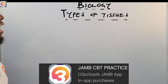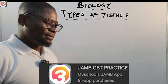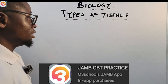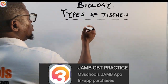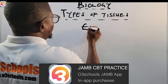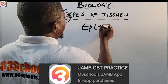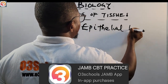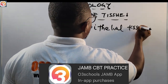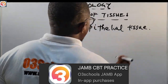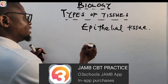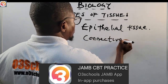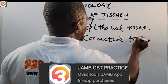Let us go to the book quickly. There are four main types of tissues we'll discuss: epithelial tissue, connective tissue, muscle tissue, and nervous tissue.